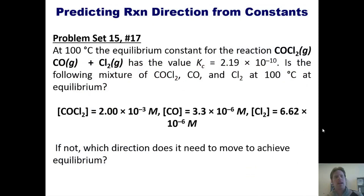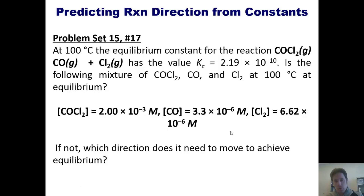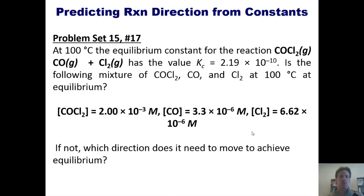That takes us to a wonderful problem. At 100 degrees Celsius, the equilibrium constant for this reaction has a value KC equals this number here. Is the following mixture of these different ingredients at equilibrium, given the individual concentrations of those three ingredients? If not, in what direction does it need to shift to achieve equilibrium? I'm not going to do this for you, but I will give you some counsel. Using the instructions I just outlined, determine the QC expression and then plug in each of these values. Once you do that, determine if your QC is greater than, equal to, or smaller than KC, which is given in the problem. Once you know that, you should be able to determine whether or not this reaction is at equilibrium, and if not, which direction it needs to shift.